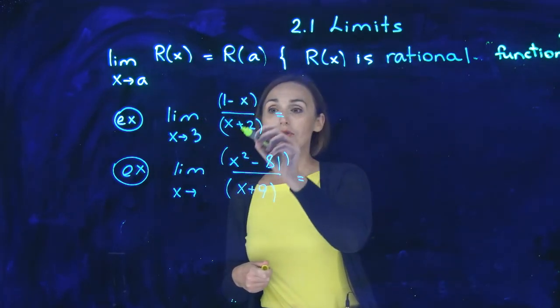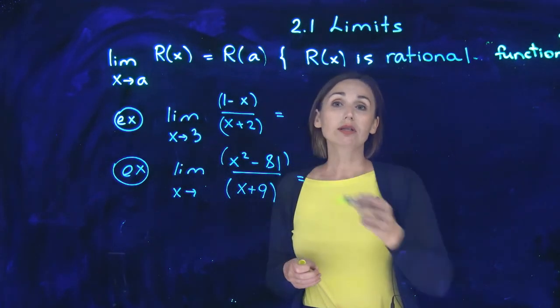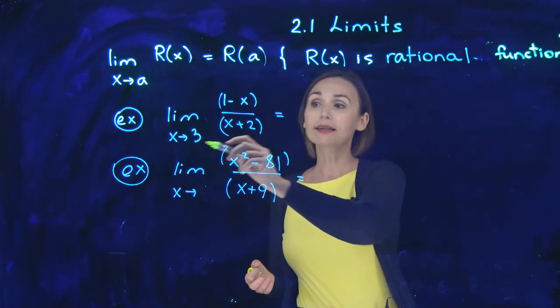Limit of 1 minus x over x plus 2 when x approaches number 3. Linear over linear, polynomial over polynomial. This is a rational function. So plug in 3.